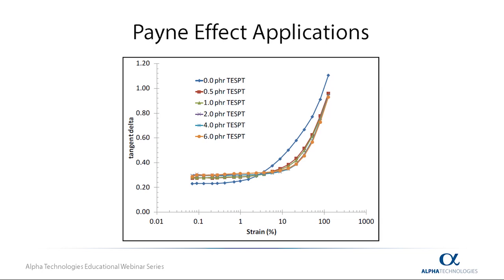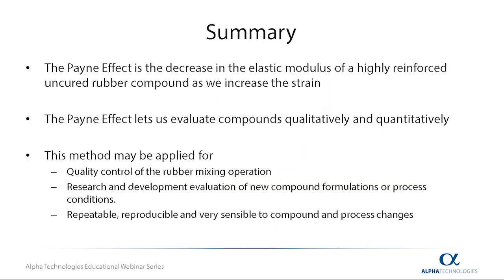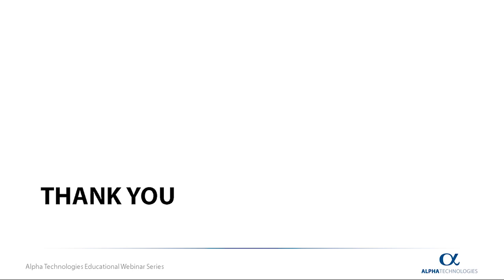The Payne effect is the decrease in the elastic modulus of a highly reinforced uncured rubber compound as we increase the strain. The Payne effect lets us evaluate compounds qualitatively and quantitatively. This method may be applied for quality control of the rubber mixing operation, research and development evaluation of new compound formulations or process conditions, and is repeatable, reproducible, and very sensitive to compound and process changes. This concludes our Payne effect webinar. Thank you so much for listening and have a great day. Thank you again for joining us for our first webinar. We look forward to many educational talks in the future.